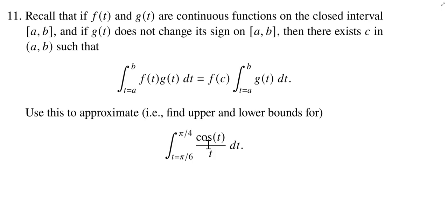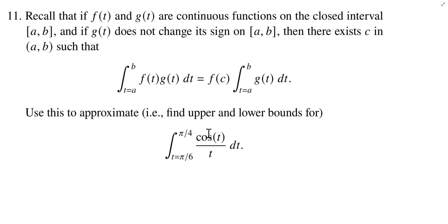One of the things we get to choose, based on this formula above, is which function is going to be our f and which is going to be our g. We have two different functions we could be thinking about here: cosine of t and 1 over t. The hypothesis is that g of t shouldn't change sign on the interval from π/6 to π/4. Both 1/t and cosine of t would be positive anywhere on that interval, so we can choose either one to be our g.